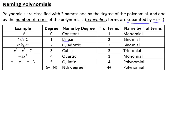Our next one — the highest degree is x squared. We already know the name for those: they're called quadratic functions or quadratic polynomials. This also happened to have two terms, so that's a binomial as well. Degree three is called cubic — x to the third is our highest power, that's a cubic polynomial — and this happened to have three terms, so it's called a trinomial. Tri meaning three.